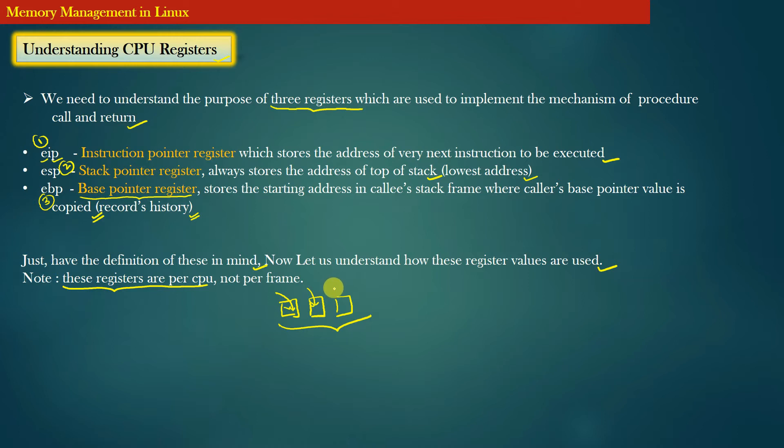The only difference is that registers are more quickly accessible to the CPU as compared to the RAM memory. So for those operations which CPU needs to perform millions of times per second, those operations are performed by CPU with the help of registers. These three registers are per CPU and not per frame, so it means that these are global registers. Now let us discuss the usage of these three registers and understand how these three registers support procedure call and procedure return.